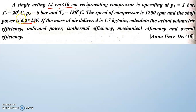Mechanical efficiency is the ratio between the power developed by the compressor (indicated power) and the shaft power. They have asked for mechanical efficiency, so we need the shaft power value. The mass of air delivery is 1.7 kg/min. The mass unit is kg, but they have given it as kg per minute, meaning they have already multiplied mass by RPM. So when substituting into our equation, we will obtain the answer per minute or per second accordingly.